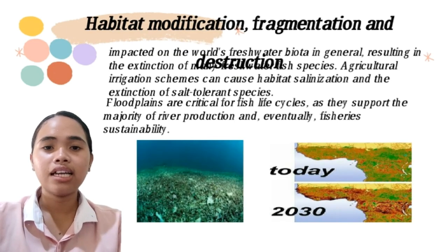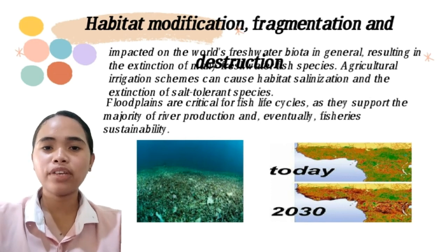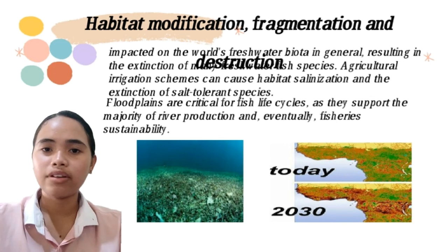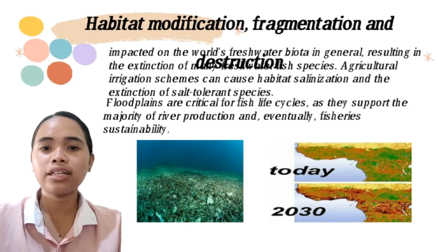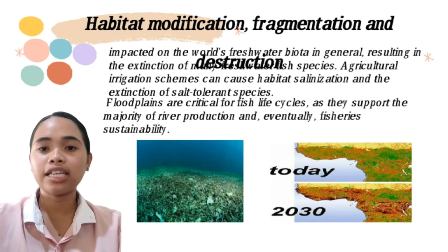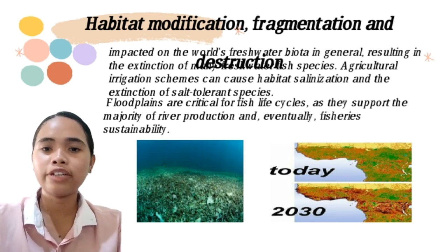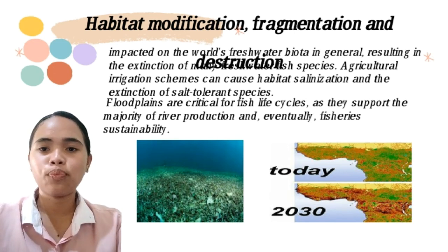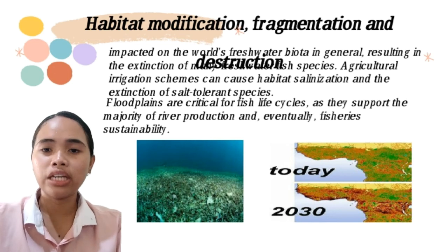Another threat is habitat modification, fragmentation, and destruction, which has impacted the world's aquatic biota, resulting in the extinction of many freshwater species. Agricultural irrigation can cause habitat salinization and the extinction of salt-tolerant species. Floodplains are critical for fish life cycles as they support the majority of river reproduction and fish sustainability.